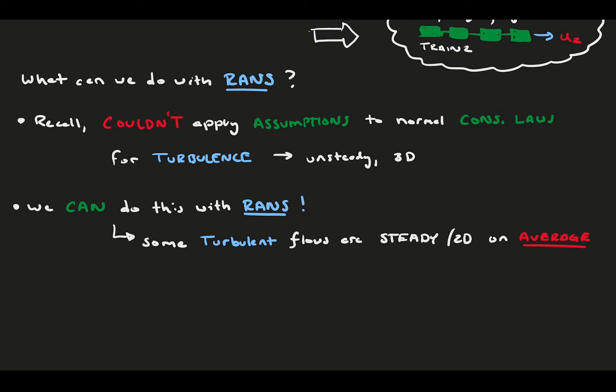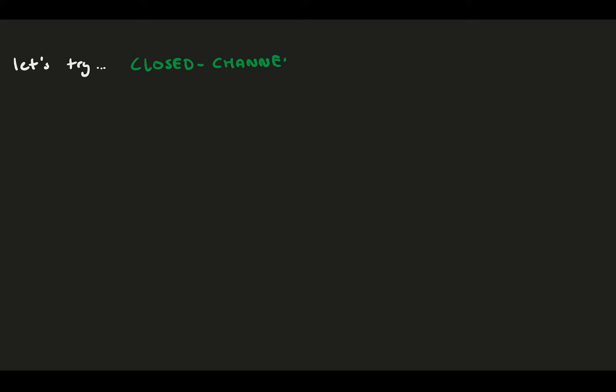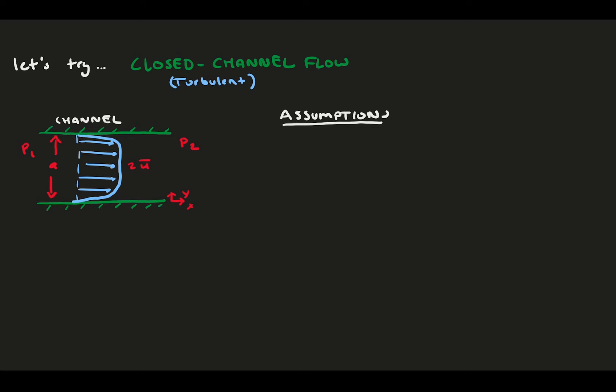Consider our favorite flow example, closed channel flow. This time, however, it's turbulent. Draw our schematic of the velocity profile, boundaries, and meaningful parameters to set up our problem. Here we consider only the average velocity field, so U-bar. In our assumptions, the flow is incompressible, fully developed, steady, 2D, and 2-component.